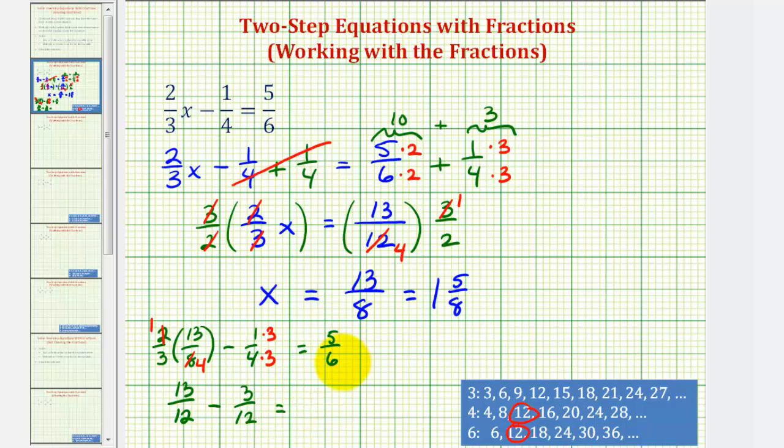On the right side, if we want this in twelfths, we have to multiply it by two over two. This would be ten-twelfths. We'll notice that thirteen-twelfths minus three-twelfths is equal to ten-twelfths, which verifies our solution is correct.